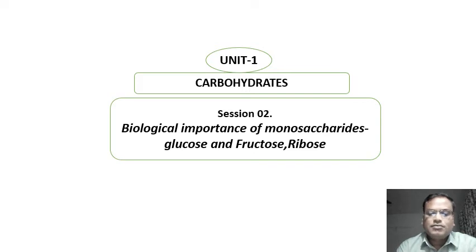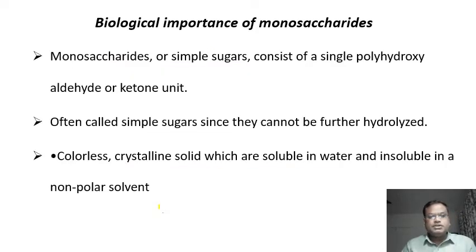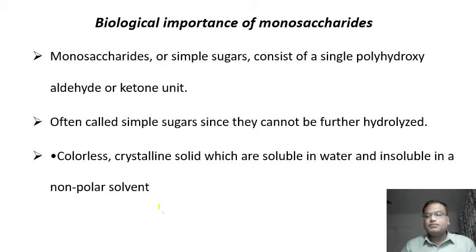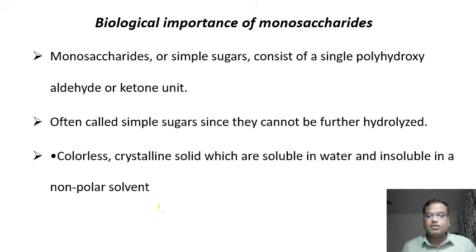In this session we study the biological importance of monosaccharides — specifically glucose, fructose, and ribose. As studied in the previous session, monosaccharides are commonly called simple sugars and consist of a single polyhydroxy aldehyde or ketone. They are the monomers because they cannot be hydrolyzed further. Chemically, they are colorless crystalline solids, soluble in water and insoluble in non-polar solvents.